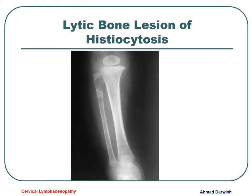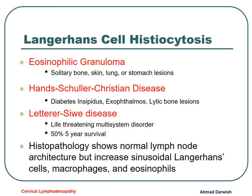Histiocytosis is one of the conditions that can lead to osteolytic lesions, and in cervical or generalized lymphadenopathy, a bone survey could be of value to detect osteolytic lesions. Whenever we have osteolytic lesions, this can indicate histiocytosis. We have many types including eosinophilic granuloma, Hand-Schüller-Christian disease, and Letterer-Siwe disease. Histopathology of the lymph node shows increased Langerhans macrophages and eosinophils.